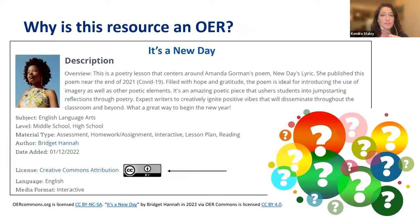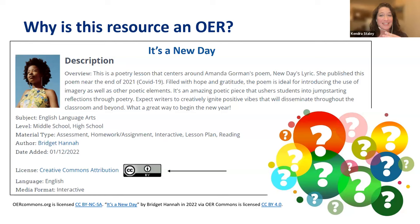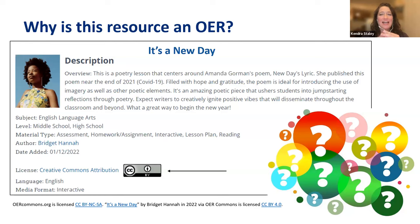Kendra asks: why is this resource an OER? I can see the Creative Commons person symbol there at the bottom, so I know the author, Bridget Hanna, has given others permission to use this, to share this, as well as to change these materials. But we also have to give her attribution or credit for creating these materials. As you can see at the bottom, I've listed the author's name, year she added the material, title of the material, location of where I found the material, and the link to the website. So I've given her credit for these materials.